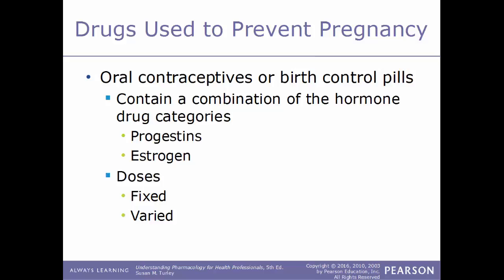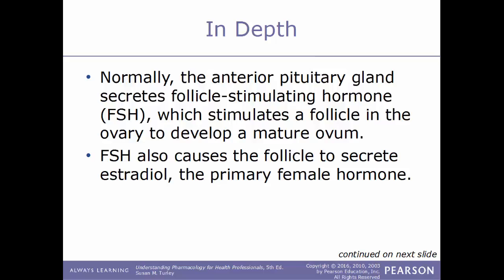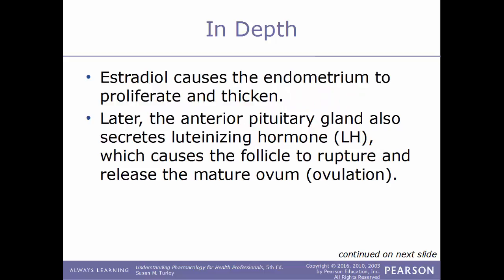Normally, the anterior lobe of the pituitary gland secretes FSH, follicle-stimulating hormone, which will stimulate a follicle within the ovary to develop a mature ovum. FSH also causes the follicle to secrete estradiol, which is the primary female hormone. Estradiol causes the endometrium to proliferate and thicken. Later, the anterior pituitary gland will secrete LH, luteinizing hormone, which causes the follicle to rupture and release the mature ovum — the process of ovulation.